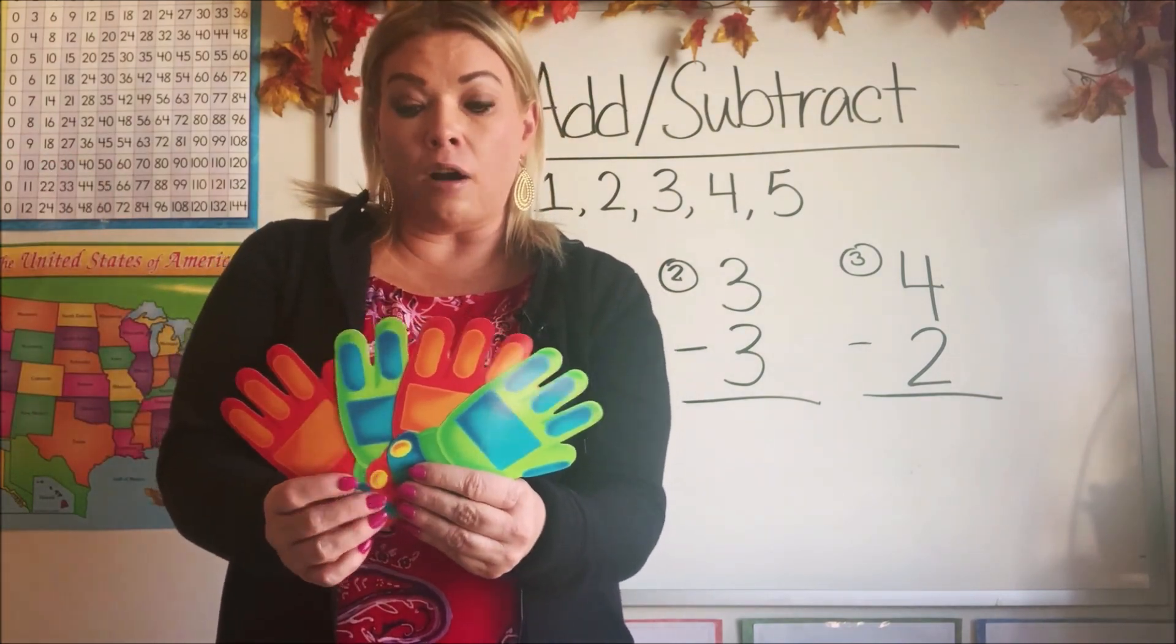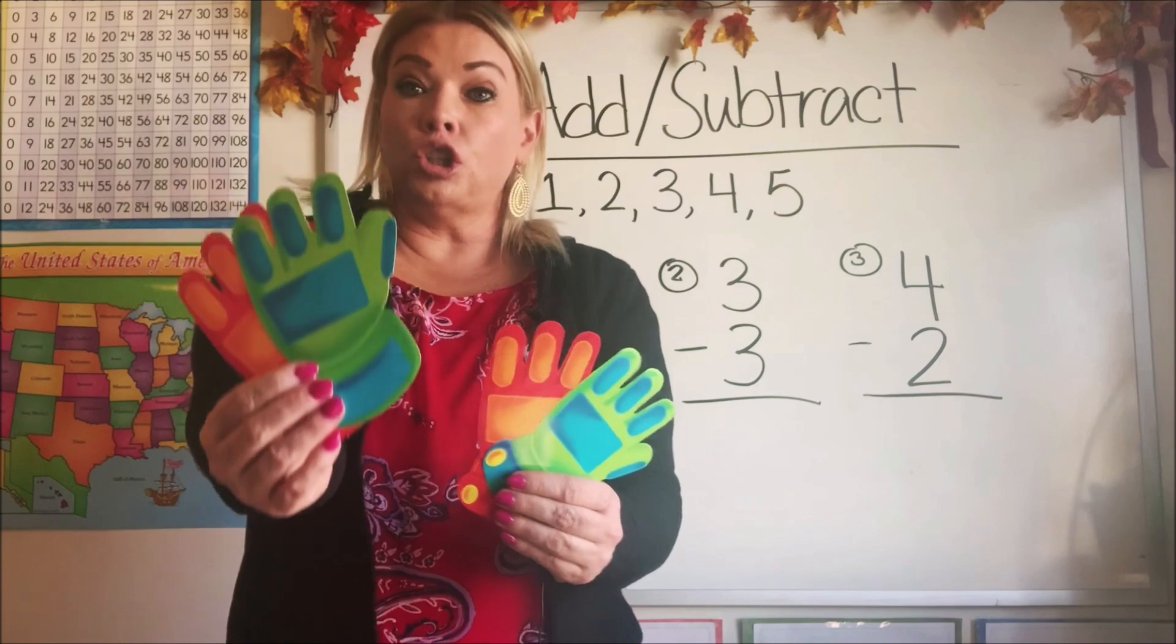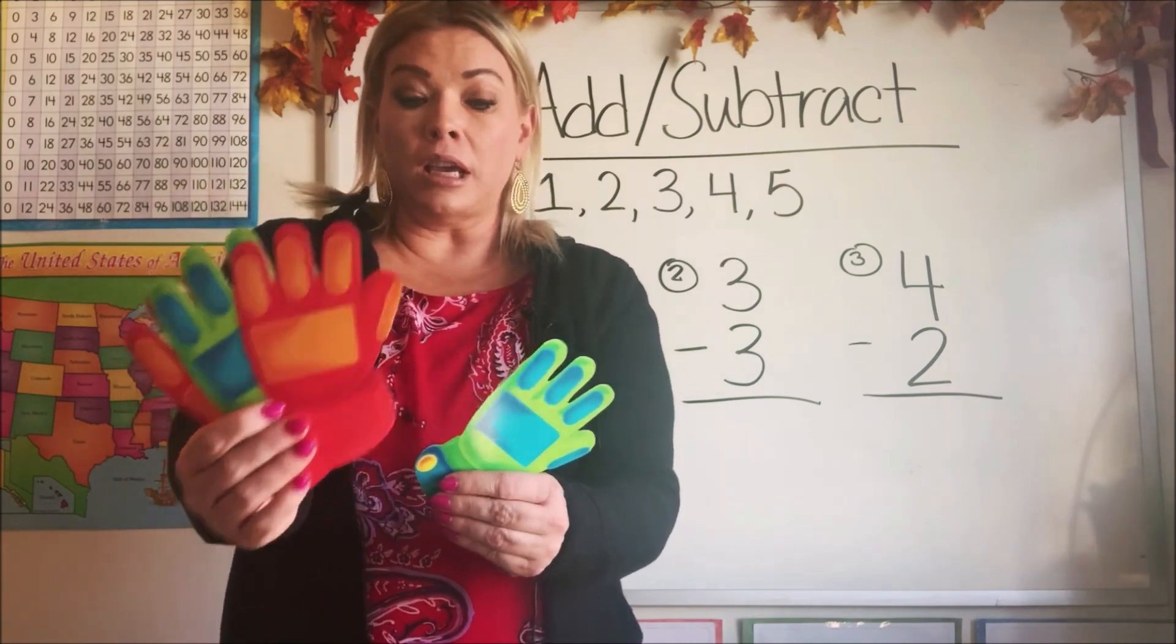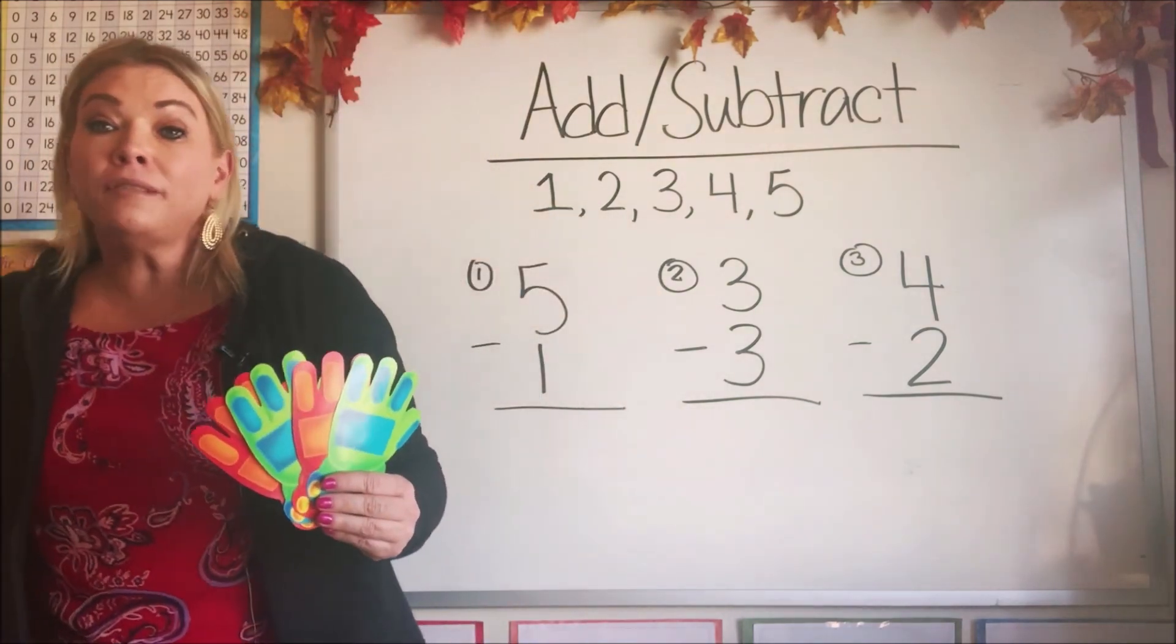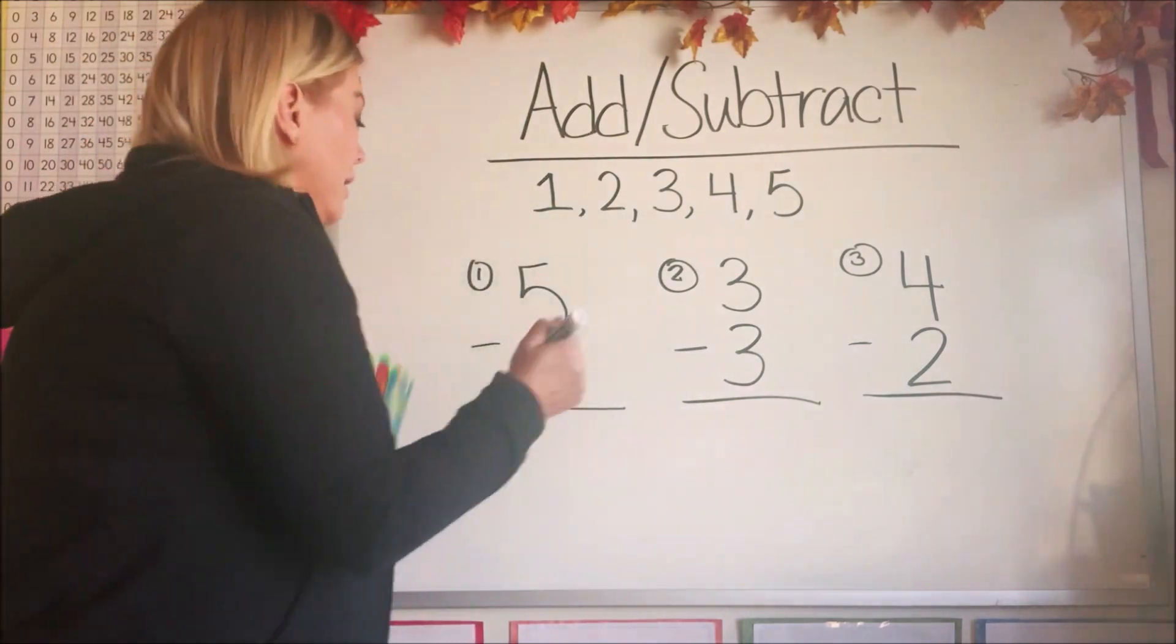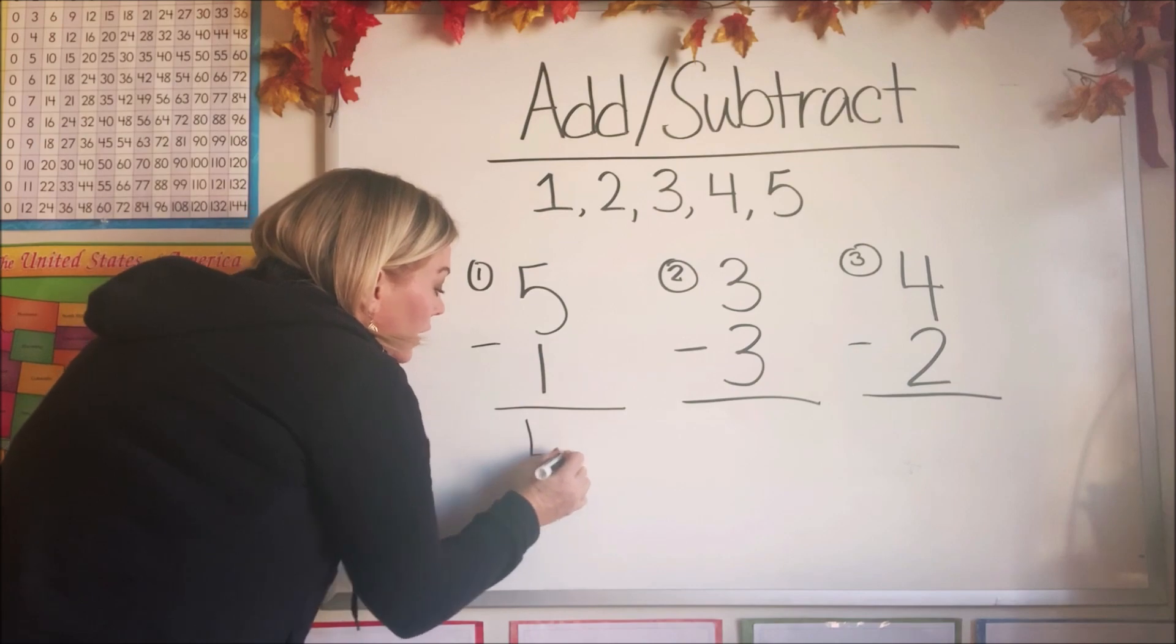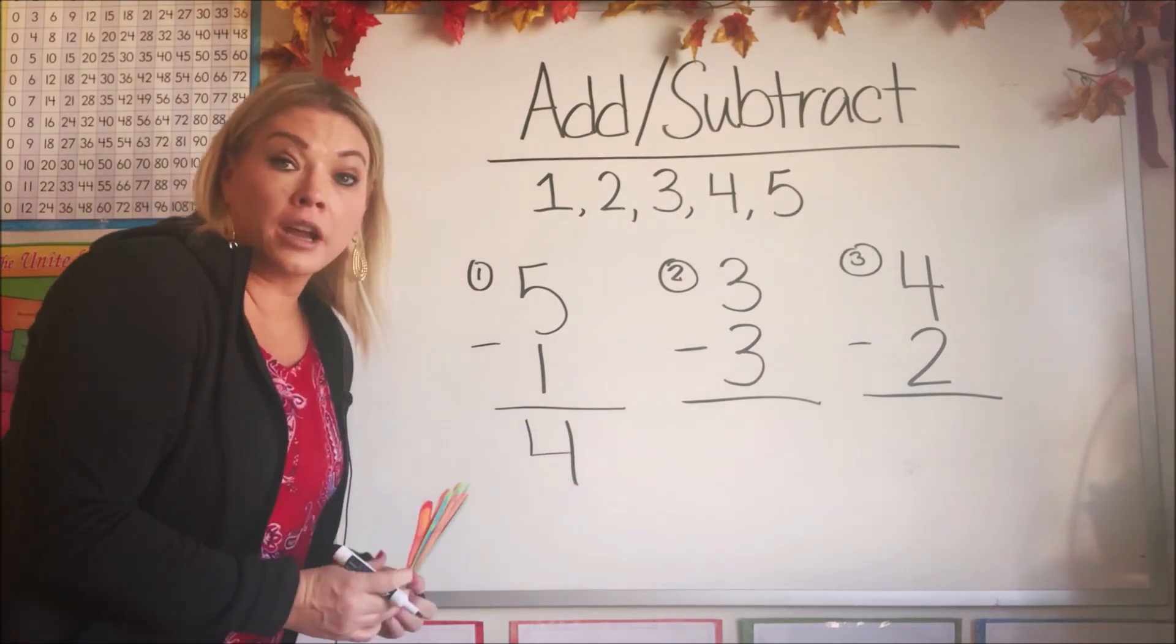Now how many is left? Because that's going to be our answer. Well, let's count. We have one, two, three, four. So our answer is four. Five, take away one, is four. So let's write our answer there.